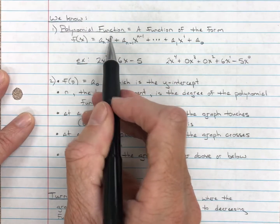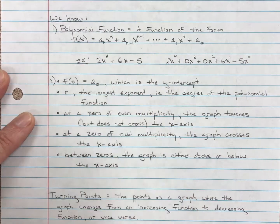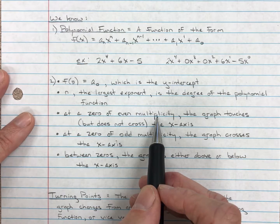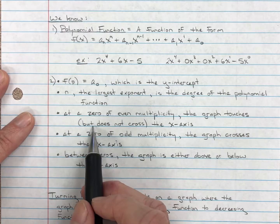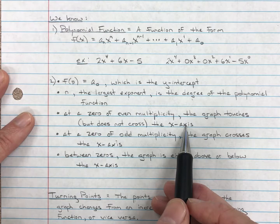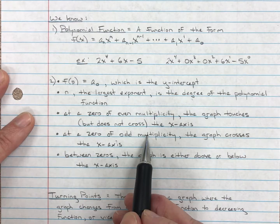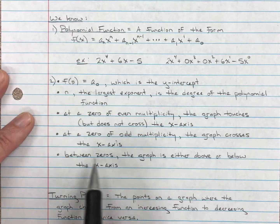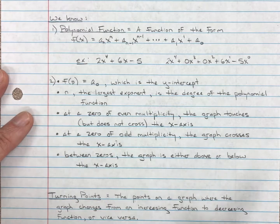N, the largest exponent, is the degree of the polynomial function. In this example, it's a fourth-degree polynomial. At a zero of even multiplicity, the zero happens two or four times — the graph touches but does not cross the x-axis; it bounces off. At a zero of odd multiplicity — multiplicity 1, 3, 5, etc. — the graph crosses the x-axis. And between the zeros, the graph is either above or below the x-axis.